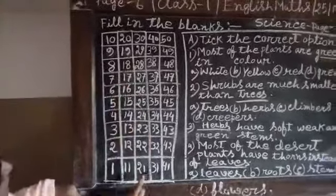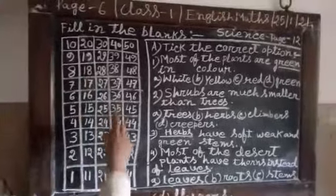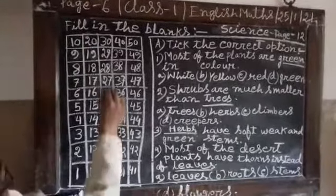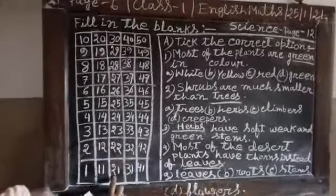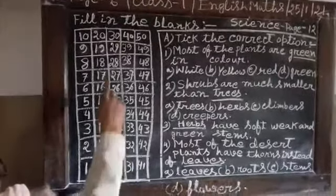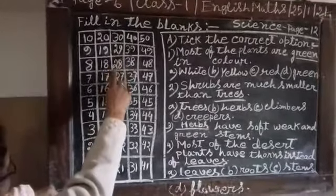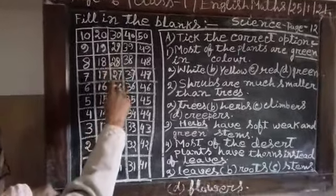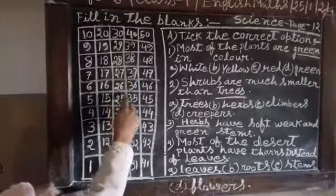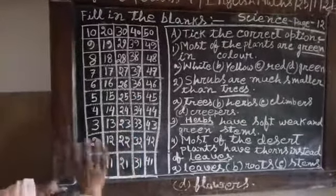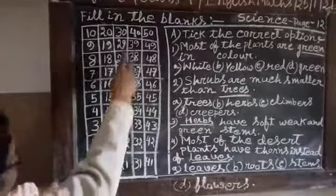30 and 21 are the range. Counting down from 30: 29, 28, 27, 26, 25, 24, 23, 22.